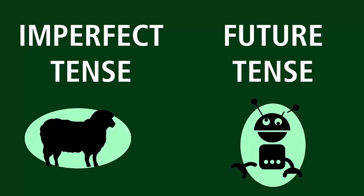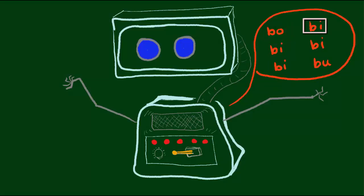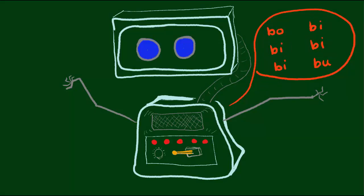I want you to think in your head about what kind of sound a robot might make. Any ideas? When I think of a robot sound, I think of something like this: Bo-bee-bee-bee-bee-boo.